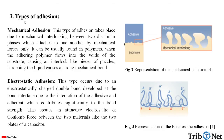What are the types of adhesion? The first one is mechanical adhesion. This type of adhesion takes place due to the mechanical interlocking between two dissimilar phases which attach to one another by mechanical forces. It can usually be found in polymers when the adhering polymer flows into voids on the substrate, causing an interlock like pieces of a puzzle. Hardening the liquid causes a strong mechanical bond. Here we can see the representation of mechanical adhesion.